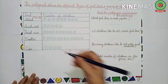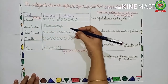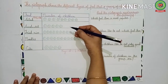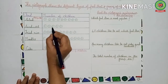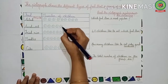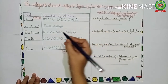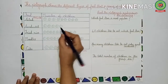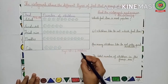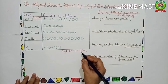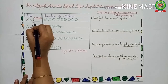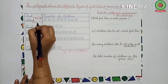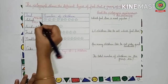Next is sandwich. Let us count how many smiley faces have been drawn: five smiley faces. One smiley face represents four children, so we have to multiply five by four. Five fours are 20. That means 20 children like sandwich.